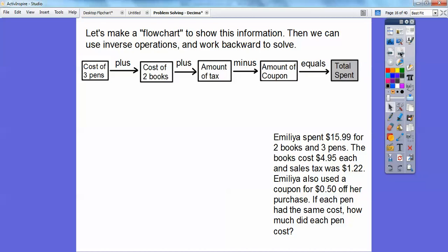Okay, so we're looking for the cost of three pens. So those three pens plus the cost of those two books plus the sales tax minus that coupon right there, that's going to equal that total amount spent right there. Okay, so it's going to be three times the cost of each pen, whatever the pens cost. That's what we're looking for, plus two times the cost of the book. So we'll put the $4.95 in right there.